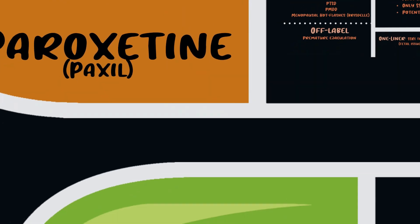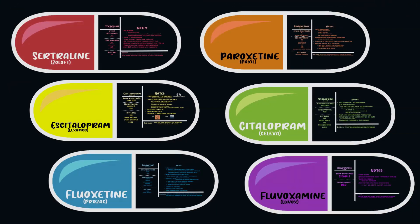Quick one-liner review: Zoloft blocks DAT so it works well with atypical depression, has an excellent safety profile and minimal interactions especially at doses under 150 mg, but tends to cause diarrhea. Lexapro is the purest SSRI with the fewest side effects and least interactions, approved in kids 12 and older, but has a mild QTc increase. Celexa is escitalopram plus a problematic R-enantiomer — it has a little antihistamine and causes more QTc problems. Prozac hits 5-HT2C indicating its bulimia indication, blocks NET making it activating, has a long half-life, is approved in kids eight and older, and has CYP interactions.